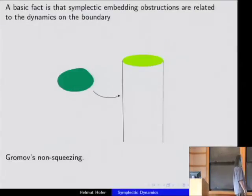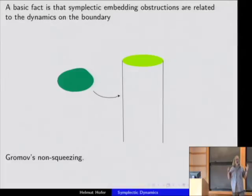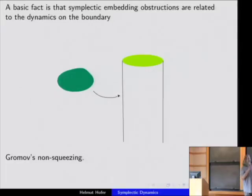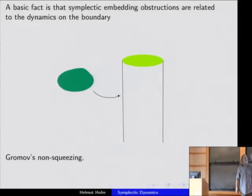Let me explain why embedding obstructions have something to do with dynamics. Gromov's non-squeezing result says: take the Euclidean ball in R^{2N} of radius r, and take the symplectic cylinder — a disk of radius R in the first copy of R² crossed with R^{2N−2}. If you can symplectically embed the ball into the cylinder, the radius R of the disk has to be greater than or equal to the radius r of the ball. You cannot fold it in and make the cylinder arbitrarily thin.